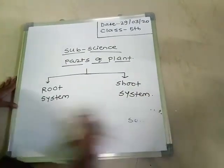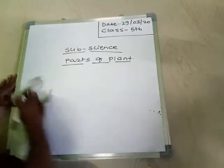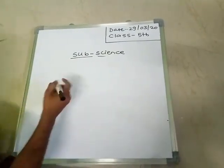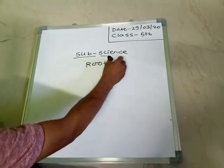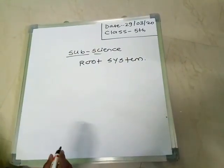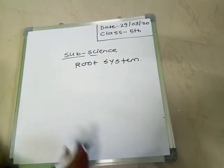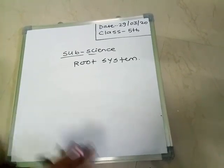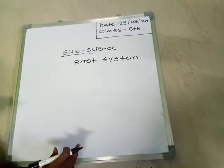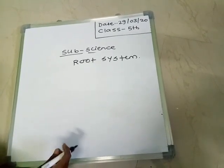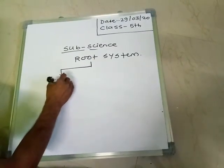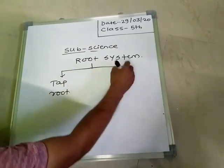First of all, the root system. The part of the plant that grows under the ground is called the root system. It always grows towards gravity and moisture and away from the light. There are two types of roots: one is the tap root and the second one is the fibrous root.